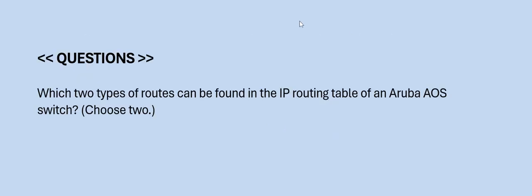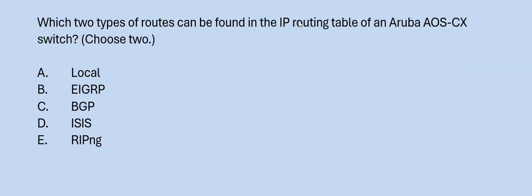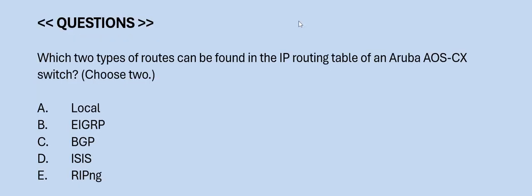Question: Which two types of routes can be found in the IP routing table of an Aruba AOS switch? Choose two. Option A: local. Option B: EIGRP. Option C: BGP. Option D: ISIS. Option E: RIPng. The correct answers are Option A and C.